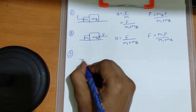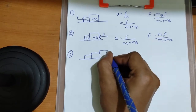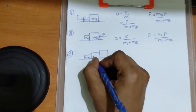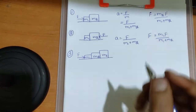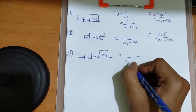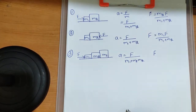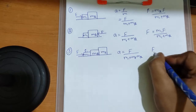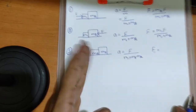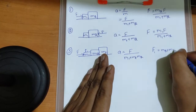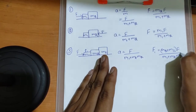Now let's take a three-block system with different masses m1, m2, m3. Suppose I'm applying force from the left side. Acceleration is common — F by sum of the masses. Now for the contact force f1: on whichever block the force is being applied, forget that block. The remaining blocks we have to write are m2 plus m3, times F by the sum of the masses.